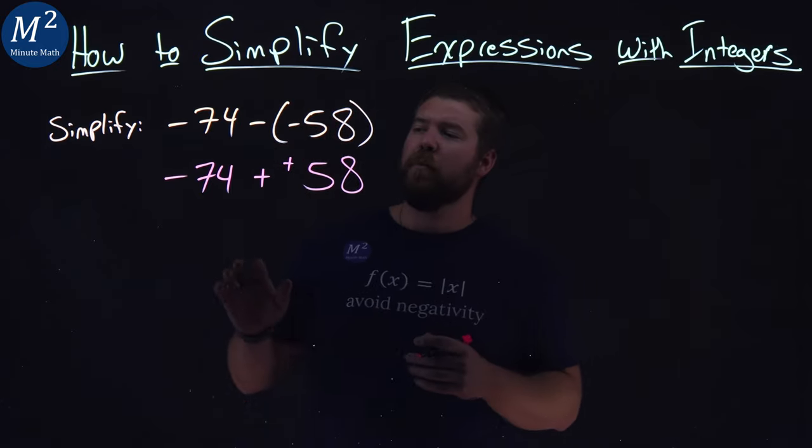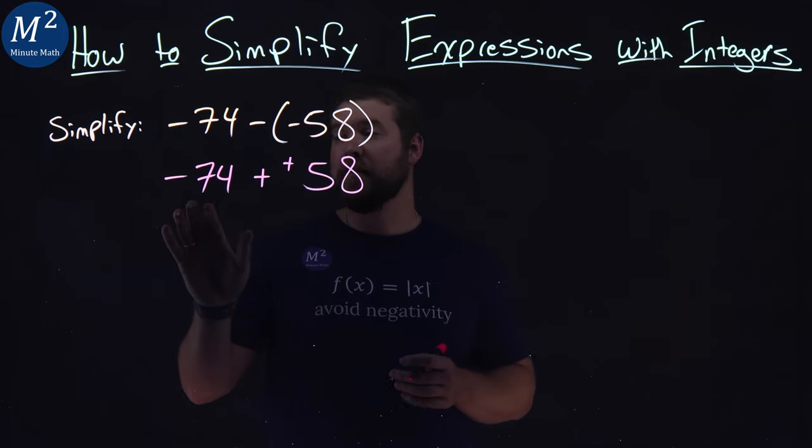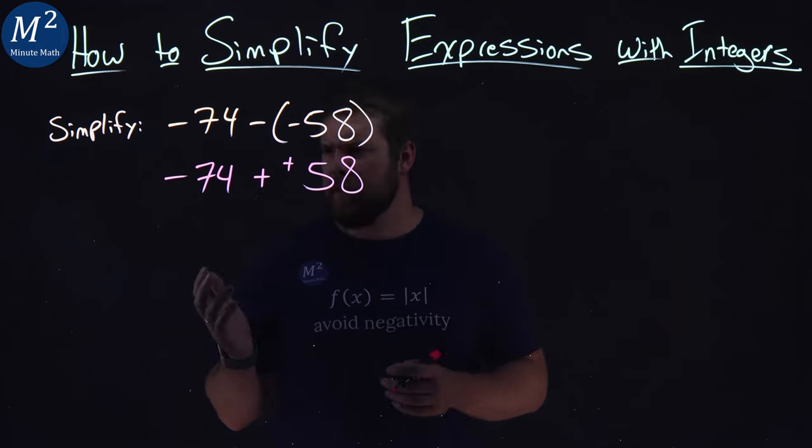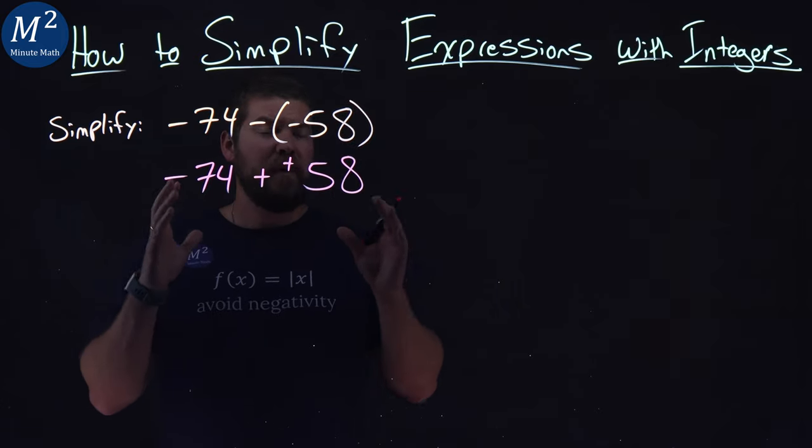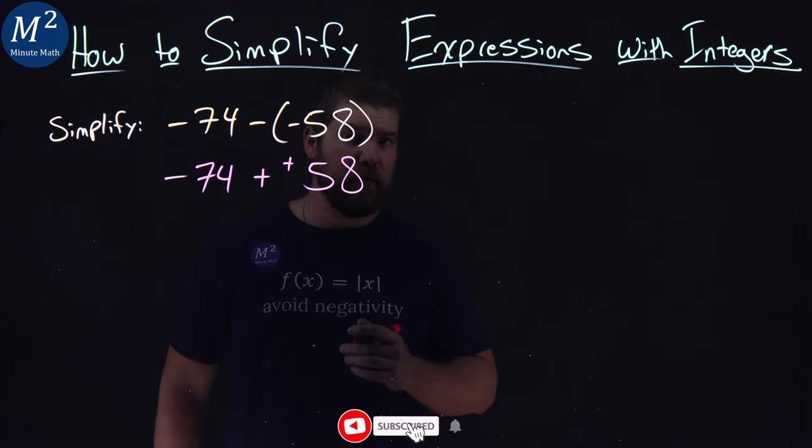This usually happens when you have a negative number that's larger than the positive number, right? Negative 74 plus a positive 58. Well, the answer is going to be eventually negative, because negative 74 is more negative than 58 is positive.